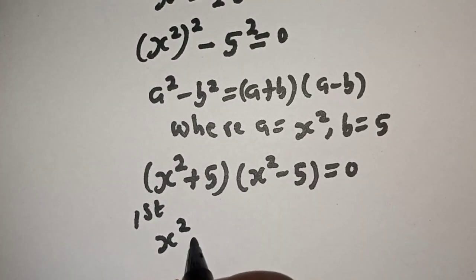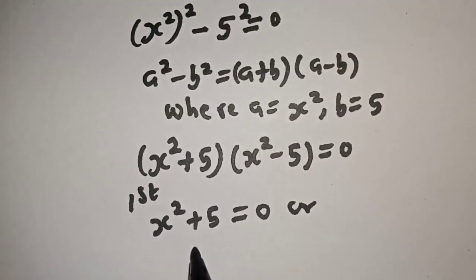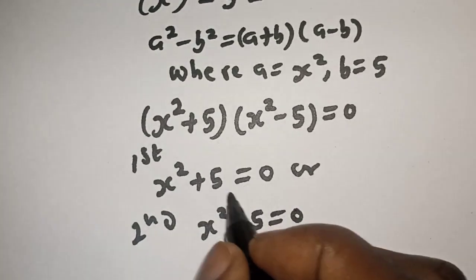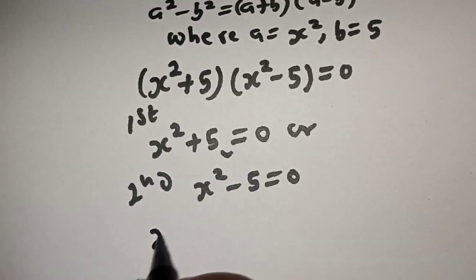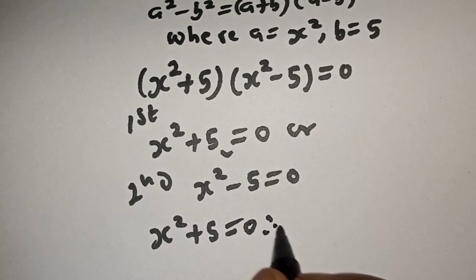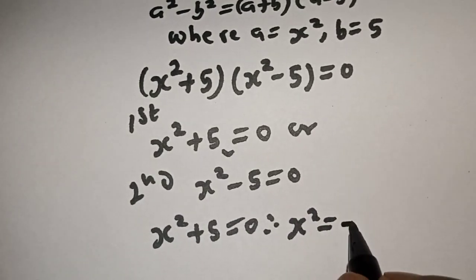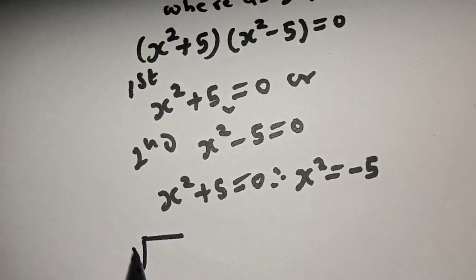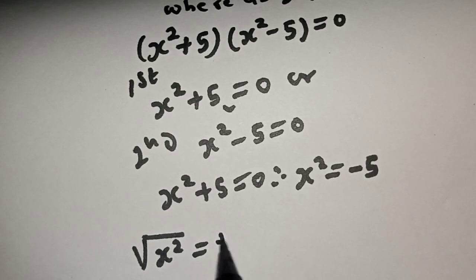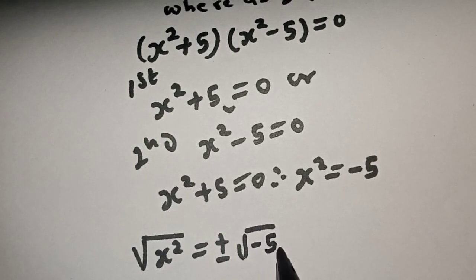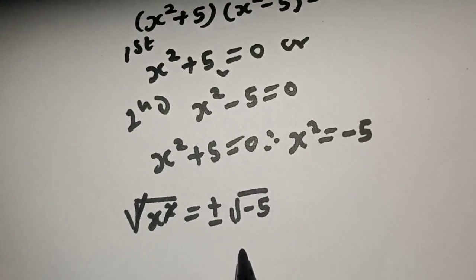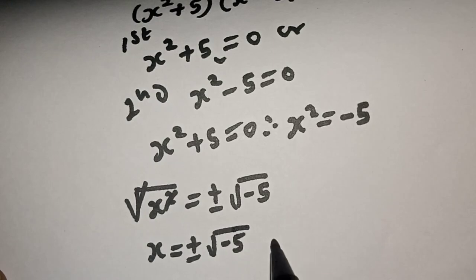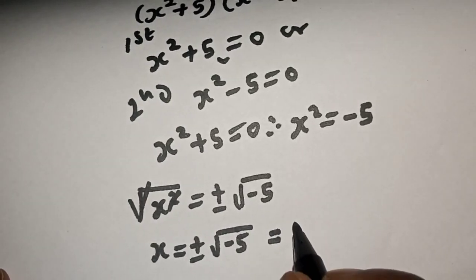There are two cases. From the first case, s squared plus 5 is equal to 0, therefore s squared is equal to minus 5. Taking the square root of both sides, square root of s squared is equal to plus or minus square root of minus 5. This cancels, so s is equal to plus or minus square root of minus 5.